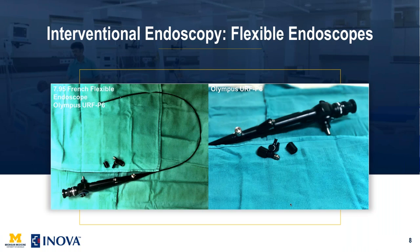Here are examples of the scopes. The 7.9 French flexible scope is a reusable scope used by urologists. After use, it can be sterilized, autoclaved, and reused. Most scopes have the same basic setup: an end where the camera attaches for connection to the screen, an area where the light cable attaches to provide light to the scope, and a channel where fluid can be supplied for continuous irrigation and where a variety of devices — such as thrombectomy devices, baskets, or lasers — can be placed.